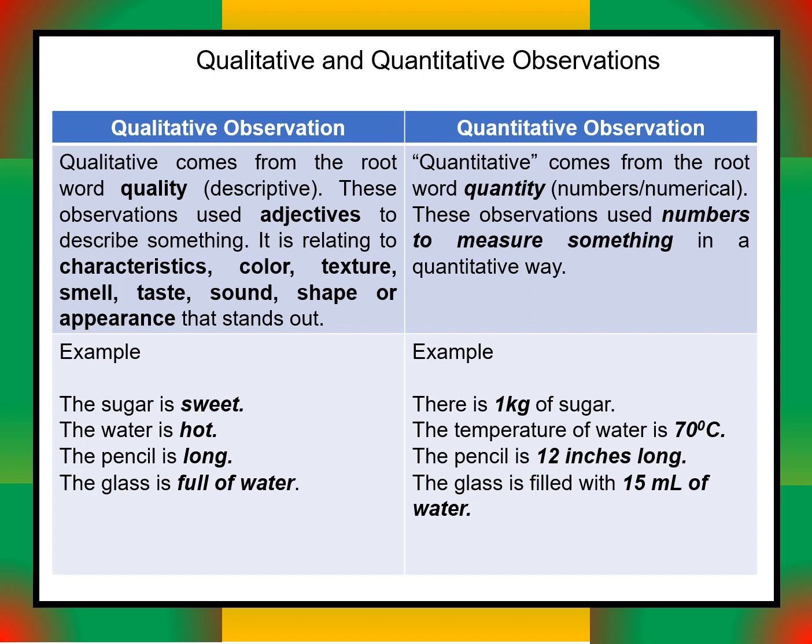Quantitative observation uses numbers or numerical measurements to describe something. For example: the sugar is sweet becomes 'there is one kilogram of sugar'; the water is hot becomes 'the water temperature is 70 degrees Celsius'; the pencil is long becomes 'the pencil is 12 inches long'; the glass is full of water becomes 'the glass is filled with 15 ml of water.' Take note of the numbers versus the descriptions.